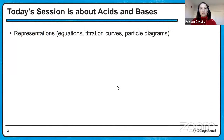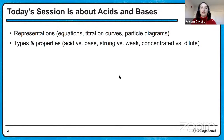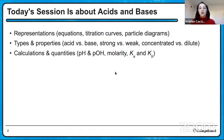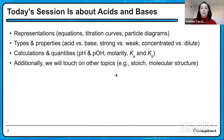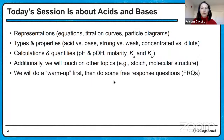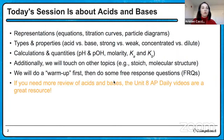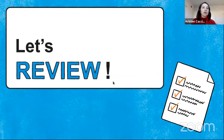Today is about acids and bases. First, we're going to warm up with some representations like equations, titration curves, and particle diagrams. Then we'll talk about different types of acids and bases, properties of those solutions, and a bunch of quantities and calculations. We'll also touch on a few other topics to remind you that on the AP exam, all free response questions will have parts from multiple units. We're going to do a warm-up first, then FRQs for most of the session, going pretty fast. You can always go back to the AP Daily videos on Unit 8 for more details.